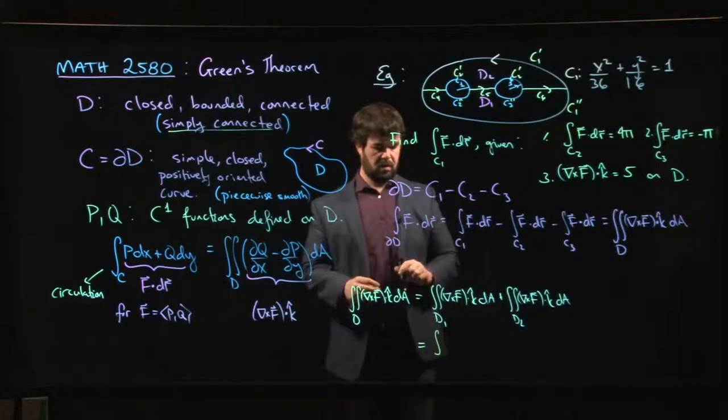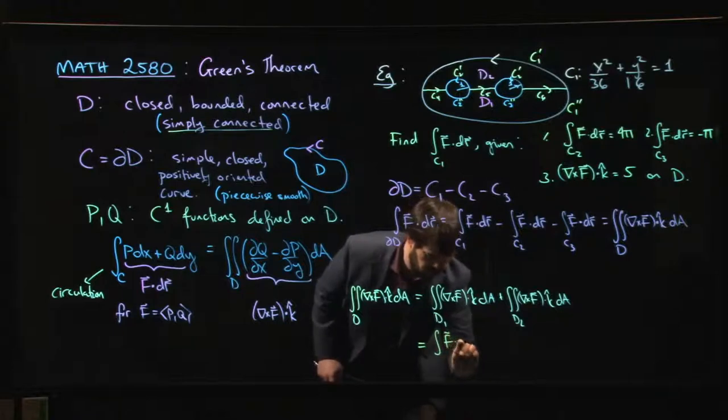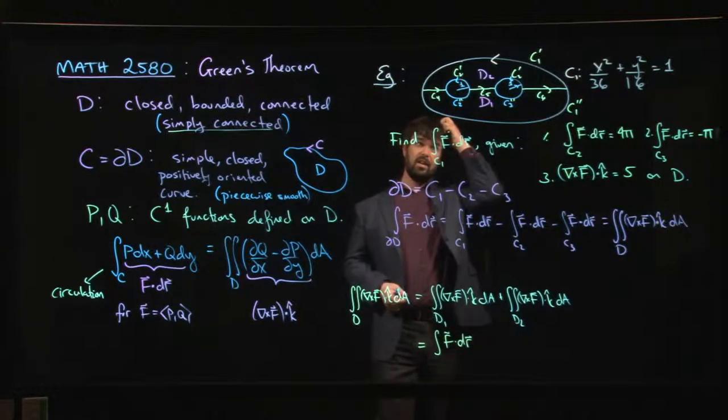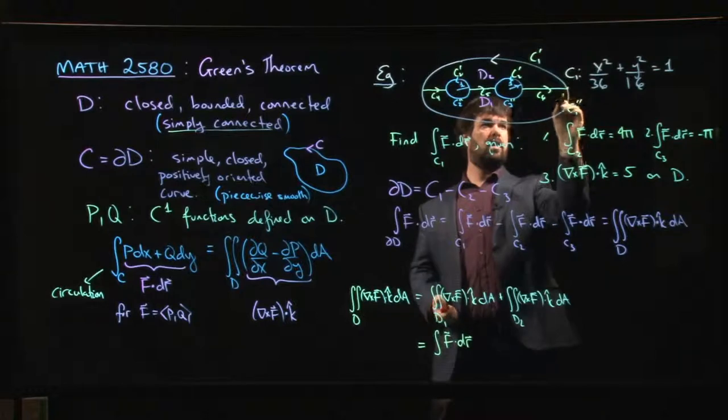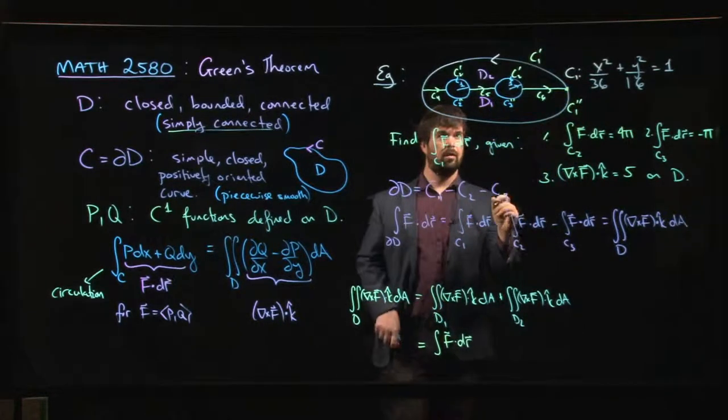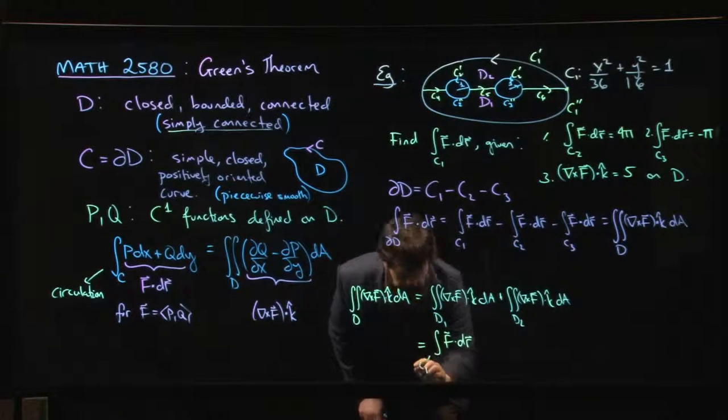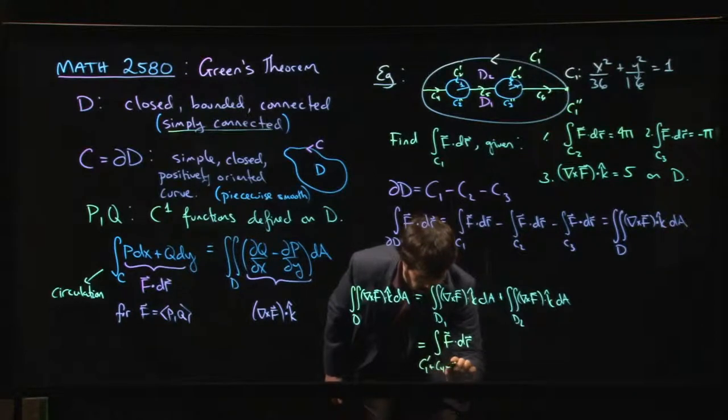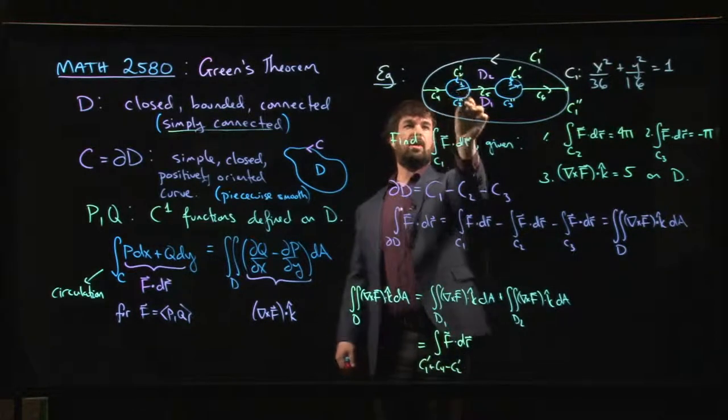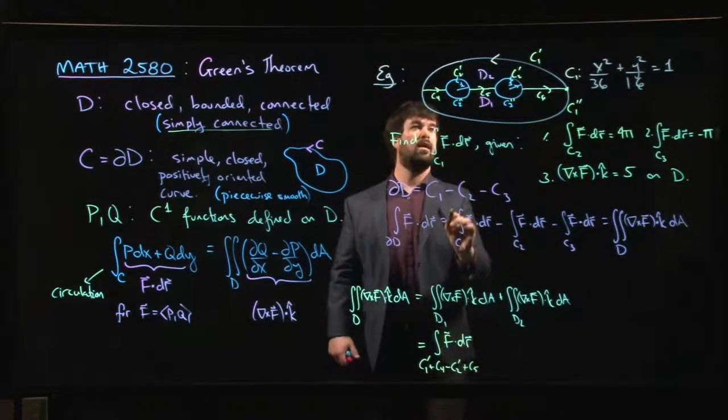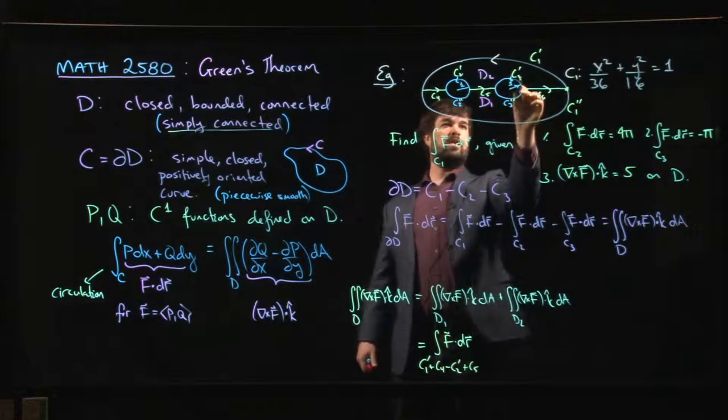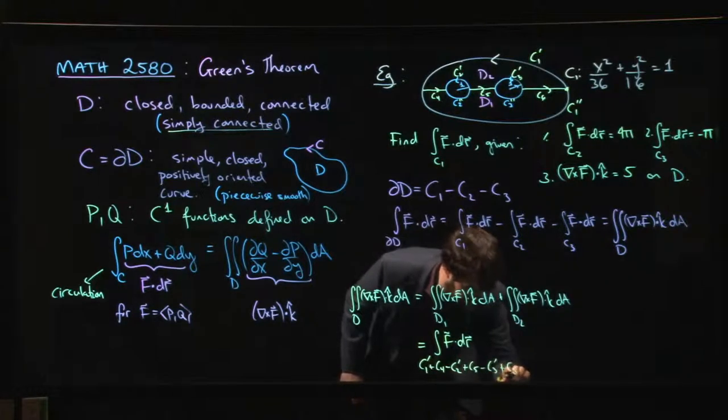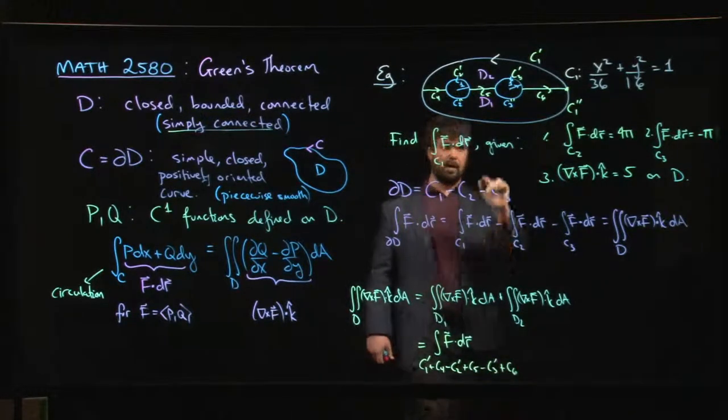So along the top half, Green's theorem gives me the integral F dot dr. So what's the curve that I need? Let's say we start here. So we do C1 prime plus C4 minus C2 prime, because we're going to go the wrong way around that, plus C5 minus C3 prime plus C6. And then I'm back to where I started.